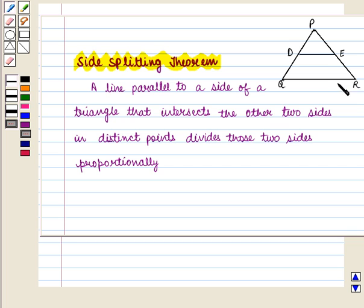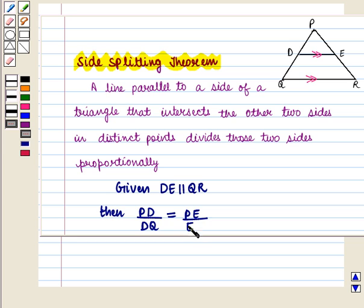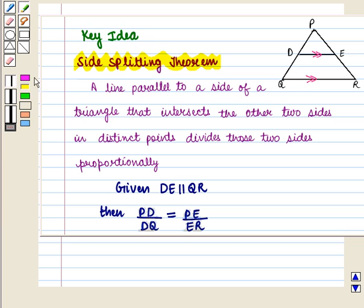In triangle PQR, if DE is parallel to QR, then PD/DQ equals PE/ER. With this key idea, we shall proceed to the solution.